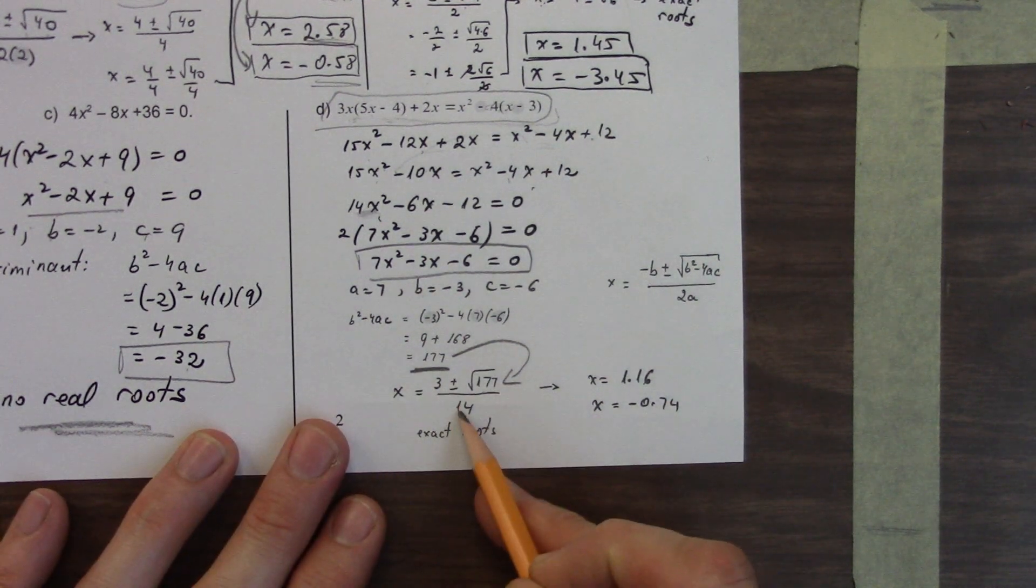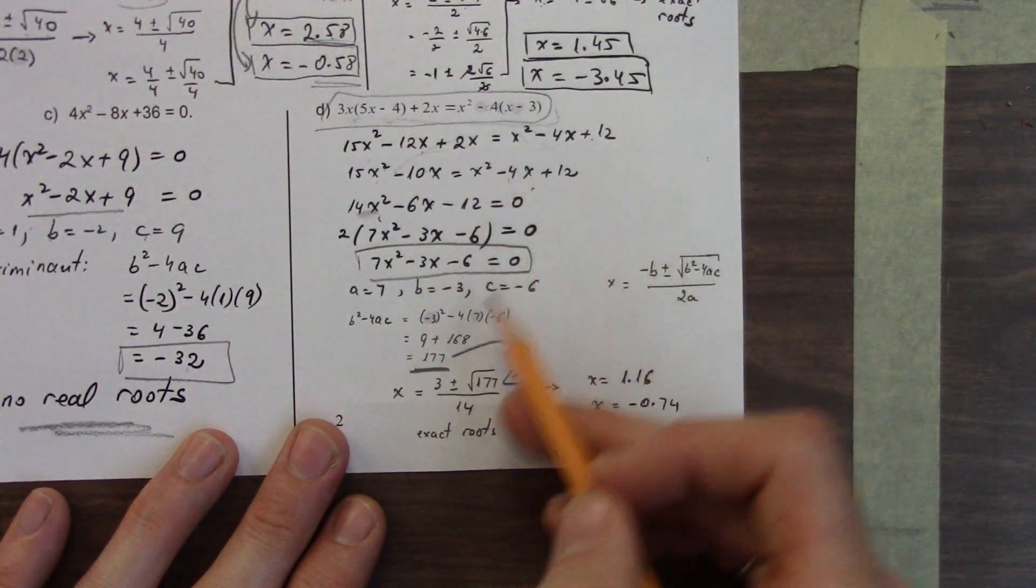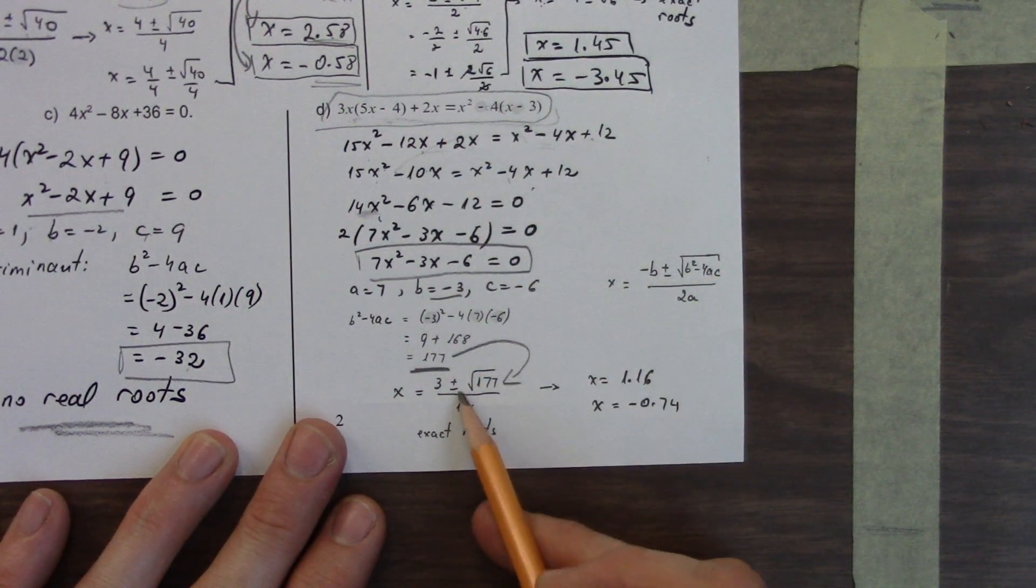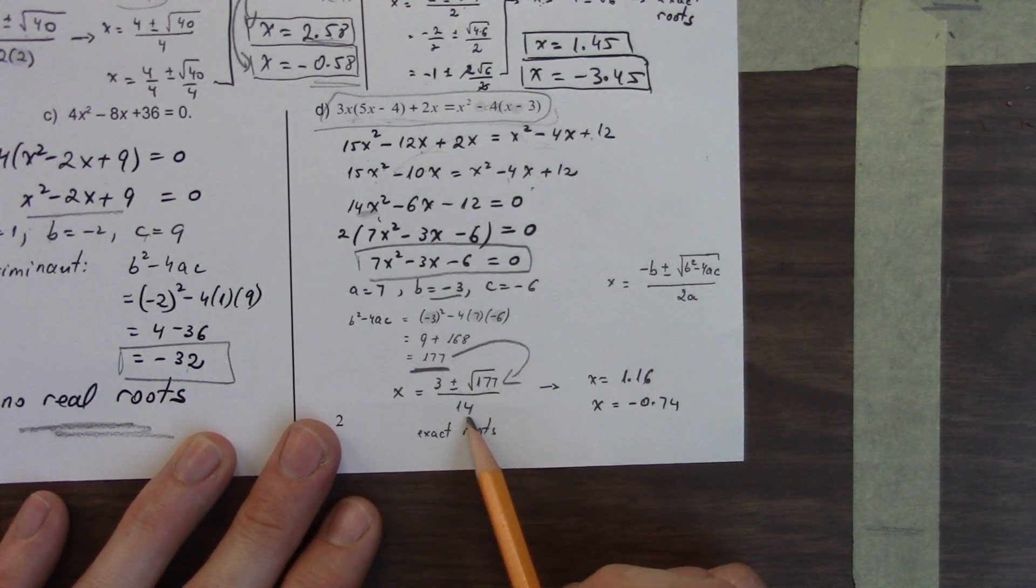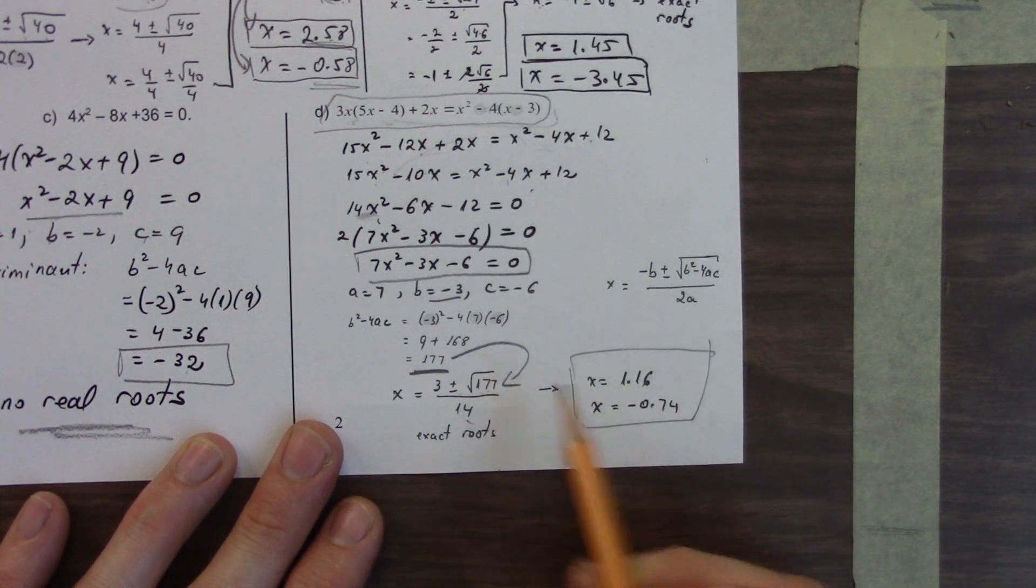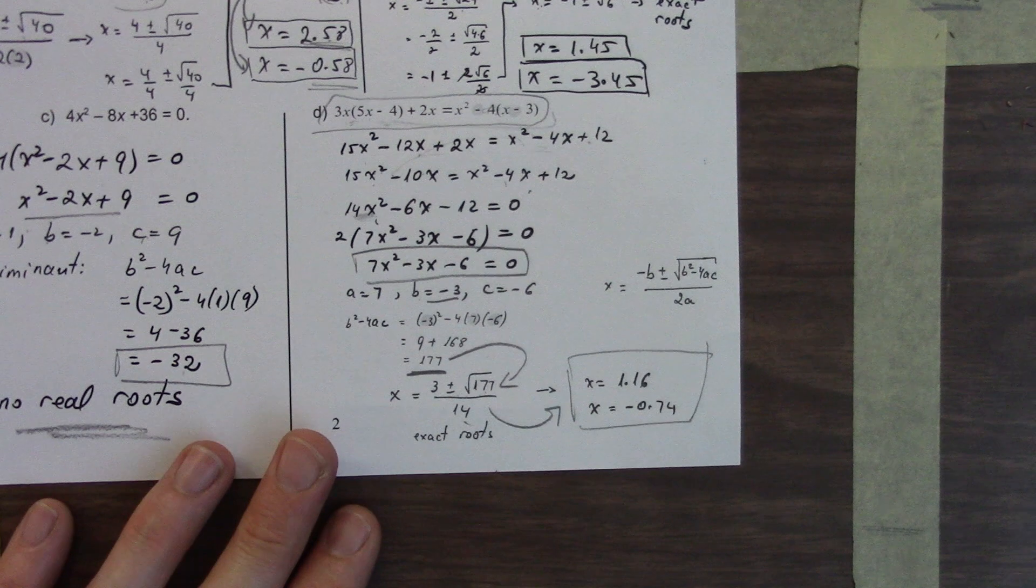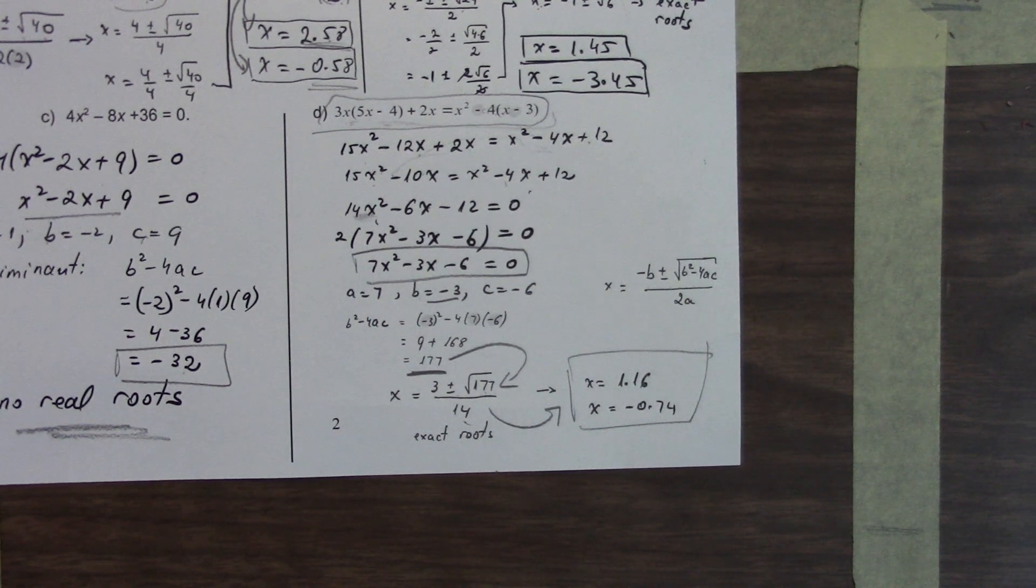Where you have negative b on the front. b in this case was negative 3, so we have positive 3 plus or minus the square root of 171 over 2a. a is 7, so we have 14. And we get these two values. Calculator's going to be your best friend. I can't do that in my head either. I don't know what the square root of 177 is. It's not an even number. You have to have a calculator.